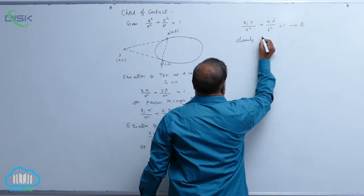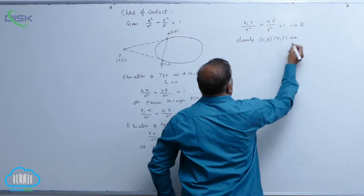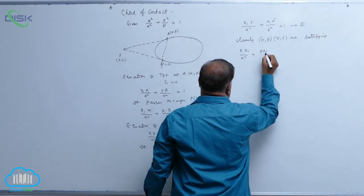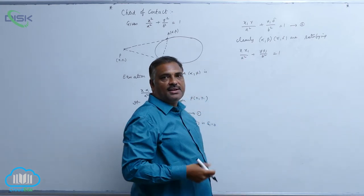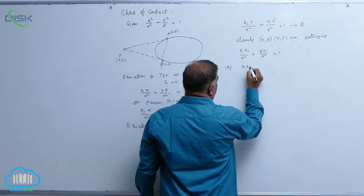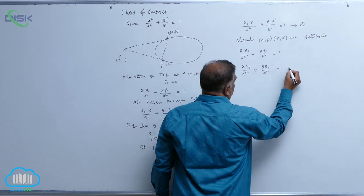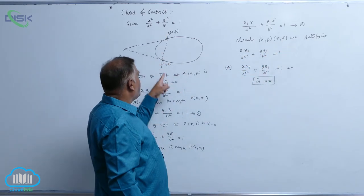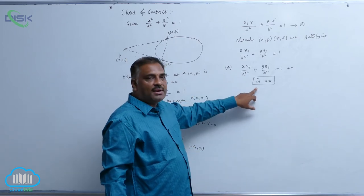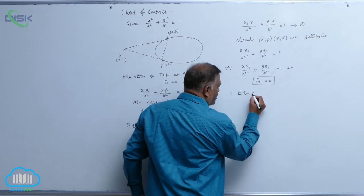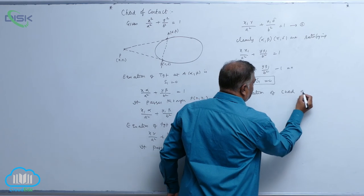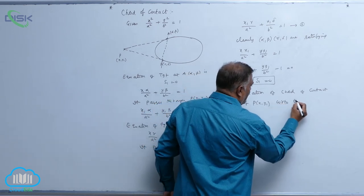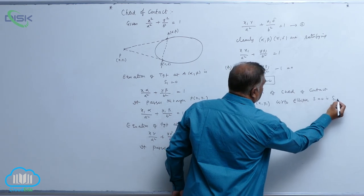So replace them with general coordinates. Clearly, α, β and γ, δ all satisfy the equation xx1 / a² + yy1 / b² = 1, which is nothing but S1 = 0, or written as xx1 / a² + yy1 / b² − 1 = 0. Since the line joining points A(α, β) and B(γ, δ) is the chord of contact, the equation of the chord of contact of point (x1, y1) with respect to the ellipse S = 0 is S1 = 0.